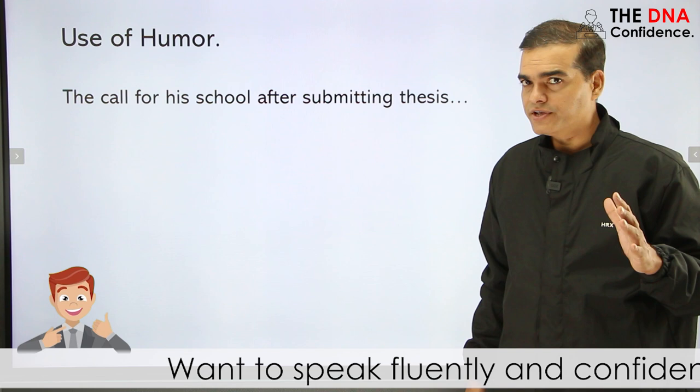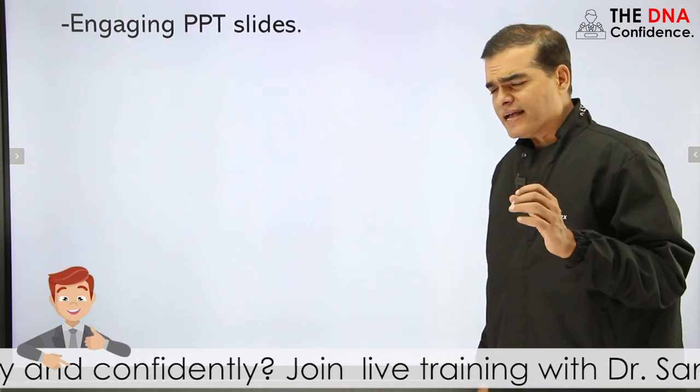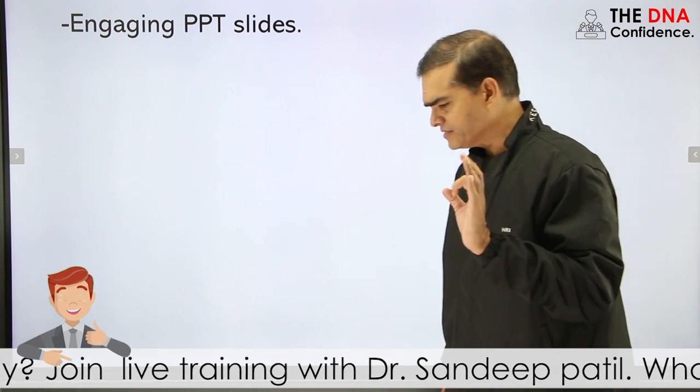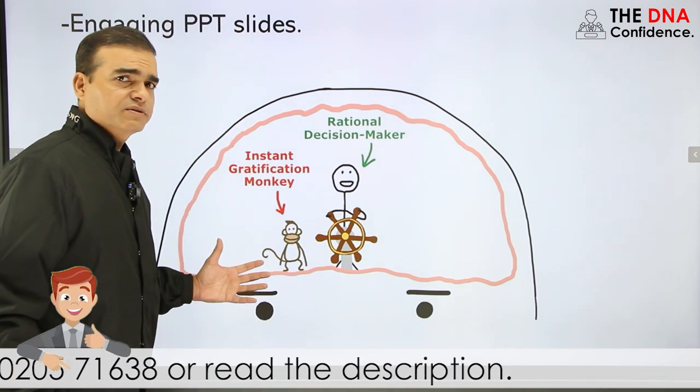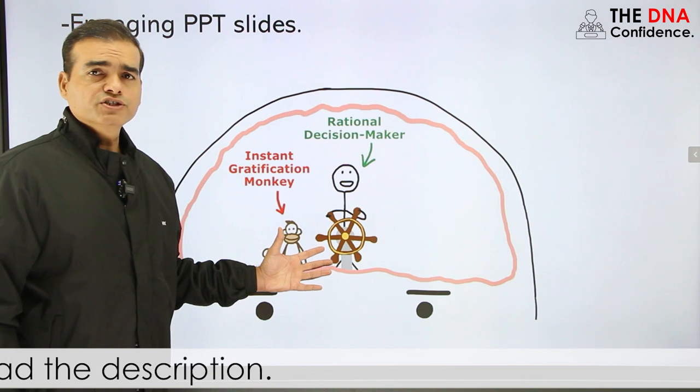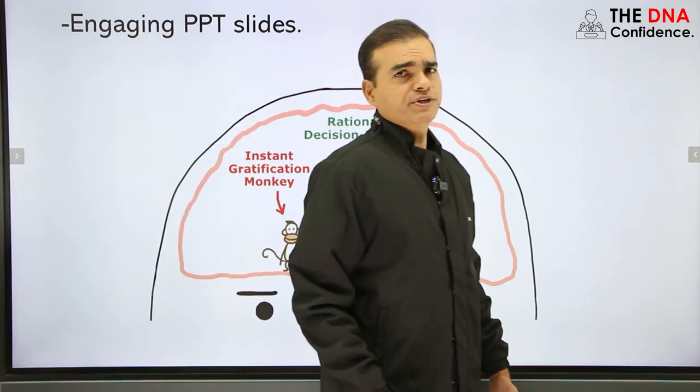Just observe these people very carefully how they have done it. He has some really nice slides which are very simple, very engaging like this one. Now he just wants to tell that there is an instant gratification monkey in the head and the rational decision maker. That's all. With these simple slides he was able to communicate with the audience very effectively.